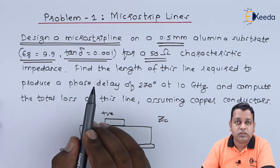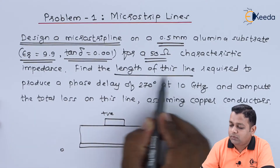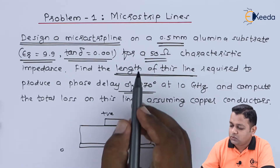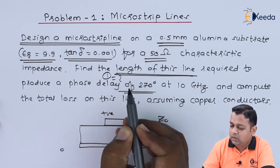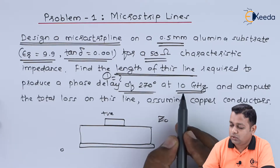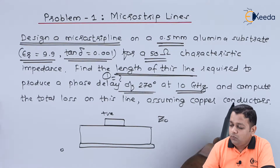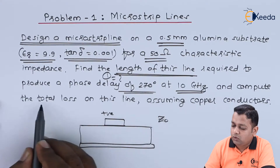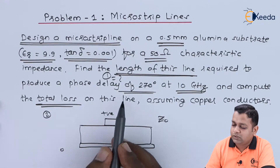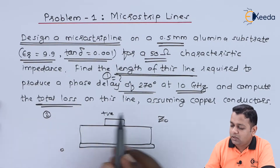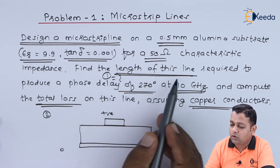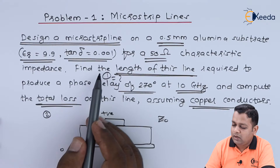What is required as per the problem statement? The length of this transmission line so that it can produce a phase delay of 270 degrees — so the length is to be calculated. This is the first part, and the frequency of operation is 10 GHz, i.e., 10 × 10^9 Hz. We are also required to compute the total loss — this is the second part of the problem. The total loss on the transmission line designed in this fashion is to be calculated assuming copper conductors.